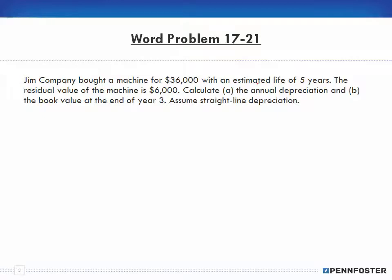Problem 17-21: Jim Company bought a machine for $36,000 with an estimated life of five years. Since they're giving an estimated life in years, I'm probably not using units of production. The residual value is $6,000. Calculate: (a) the annual depreciation — when it says 'annual depreciation,' I'm automatically thinking straight-line, because straight-line is the only method where depreciation is the same each year — and (b) the book value at the end of year three.